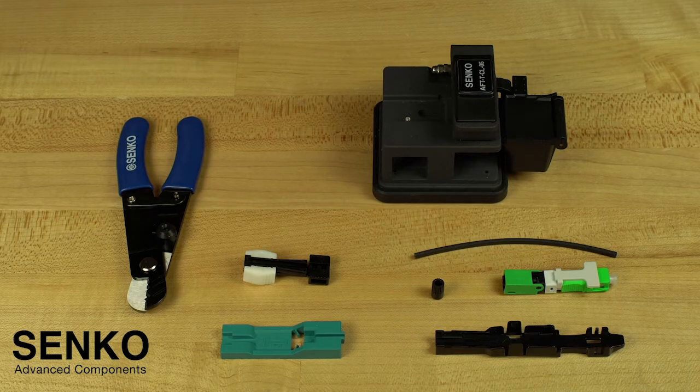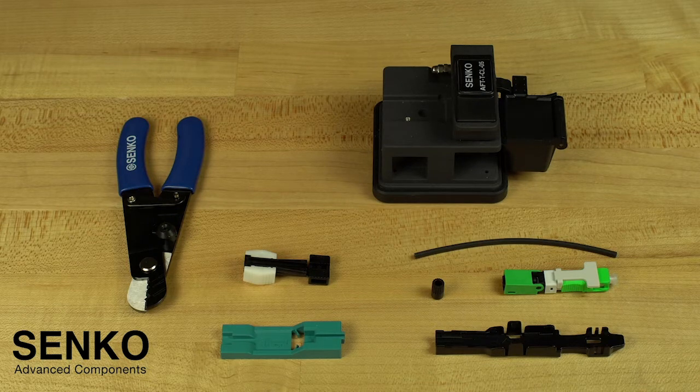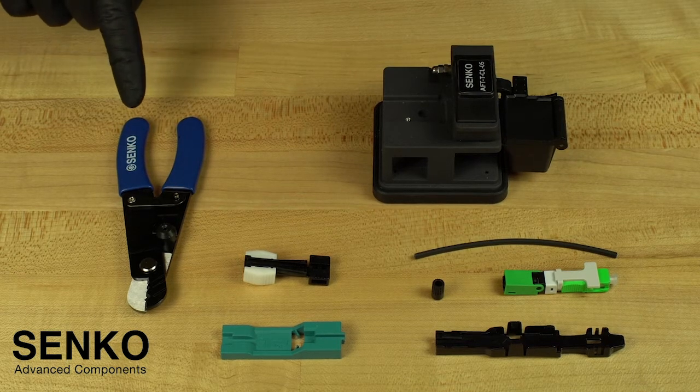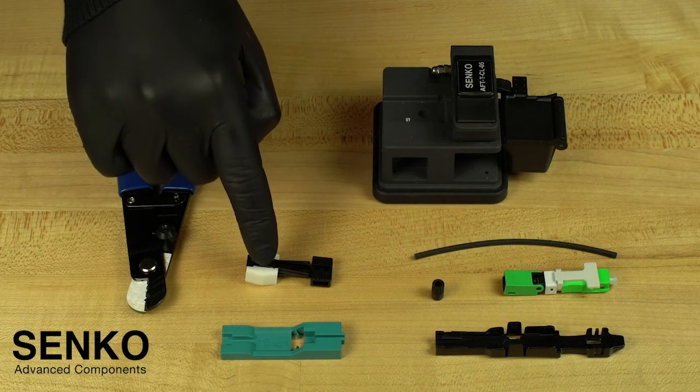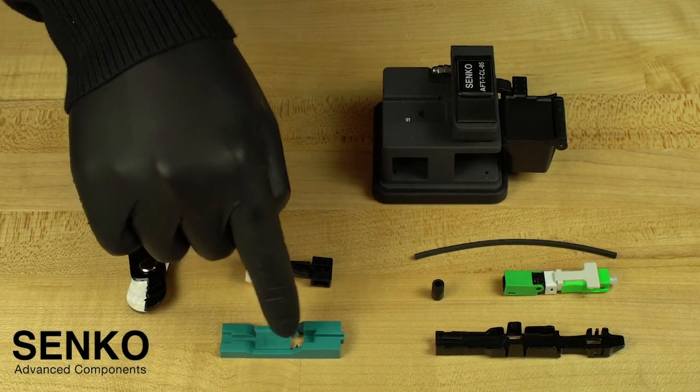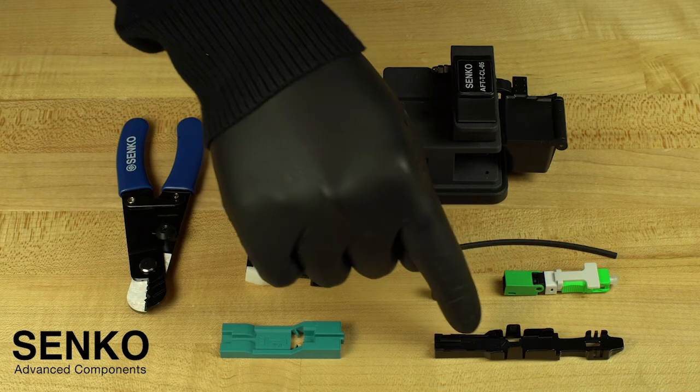You will start by confirming that you have everything you need to perform this termination. This includes cable strippers, a collet chuck, an XP-Fit cut guide spacer, and an assembly guide jig.